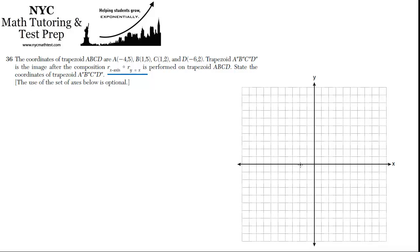Where is A? A is at negative 4, 5, so that's here. B is at 1, 5, which is here. C is at 1, 2, and D is at negative 6, 2. Let's draw this.